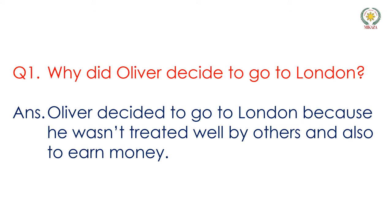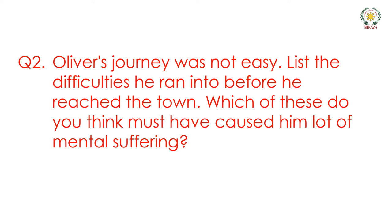Question 1: Why did Oliver decide to go to London? Because he wasn't treated well by others and also to earn money. Where he lived, people didn't treat him properly, and the other thing was that he could earn money there.